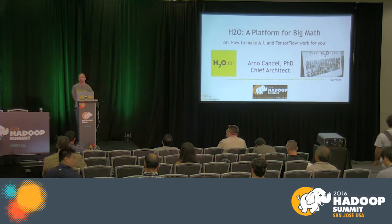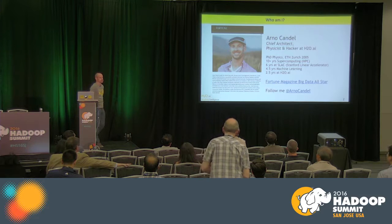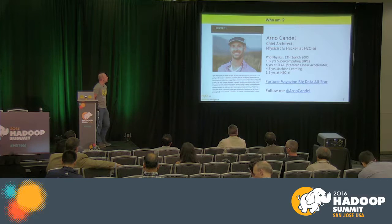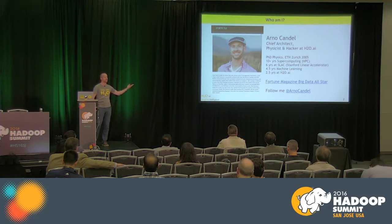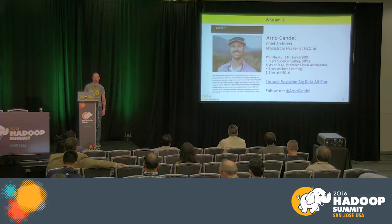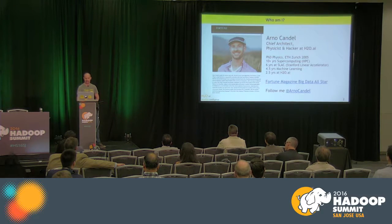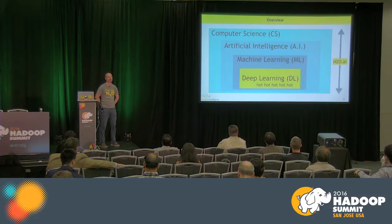Well, hello everyone. Excited to be here today. I'm the chief architect of H2O, a company that makes a machine learning platform. I have a PhD in physics, so I'm a supercomputing guy that turned data scientist, or algorithm implementer, in the last four or five years. You can read more about me in Fortune magazine — it shows how I came from a little village in Europe to Silicon Valley. And now I'm here talking about artificial intelligence, machine learning, and deep learning.